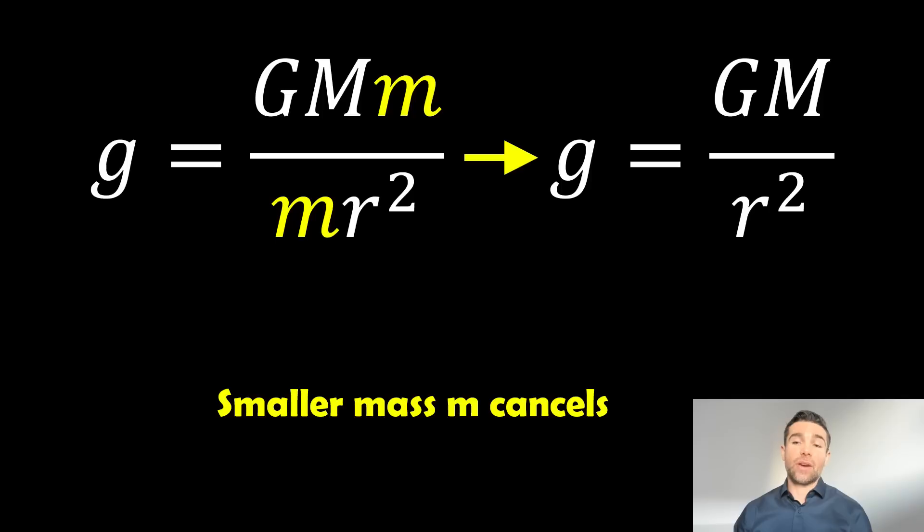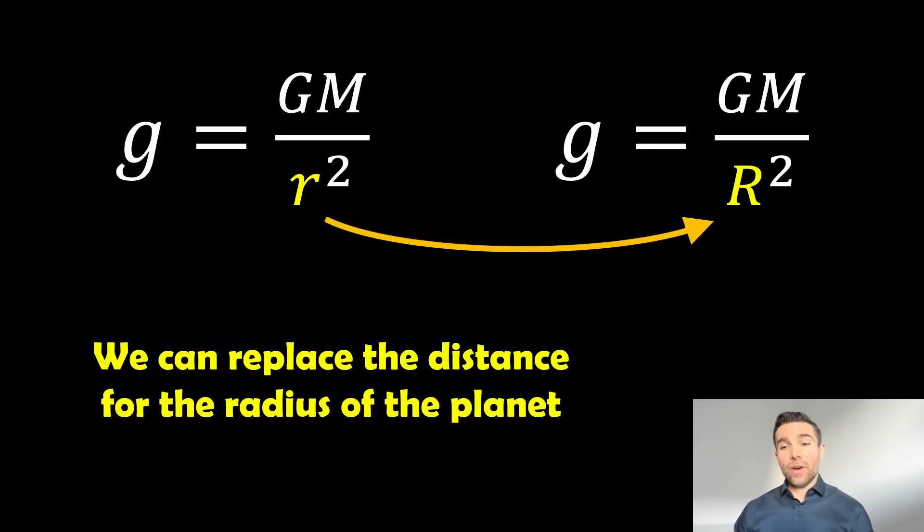So now we've got the surface gravity equation. However, we're calling it surface gravity, but we're just referring to the distance between the two objects. We can actually convert that distance between the two objects to the radius of the planet or the object. So now we're going to replace it with uppercase R, which is going to denote the radius of the planet instead.